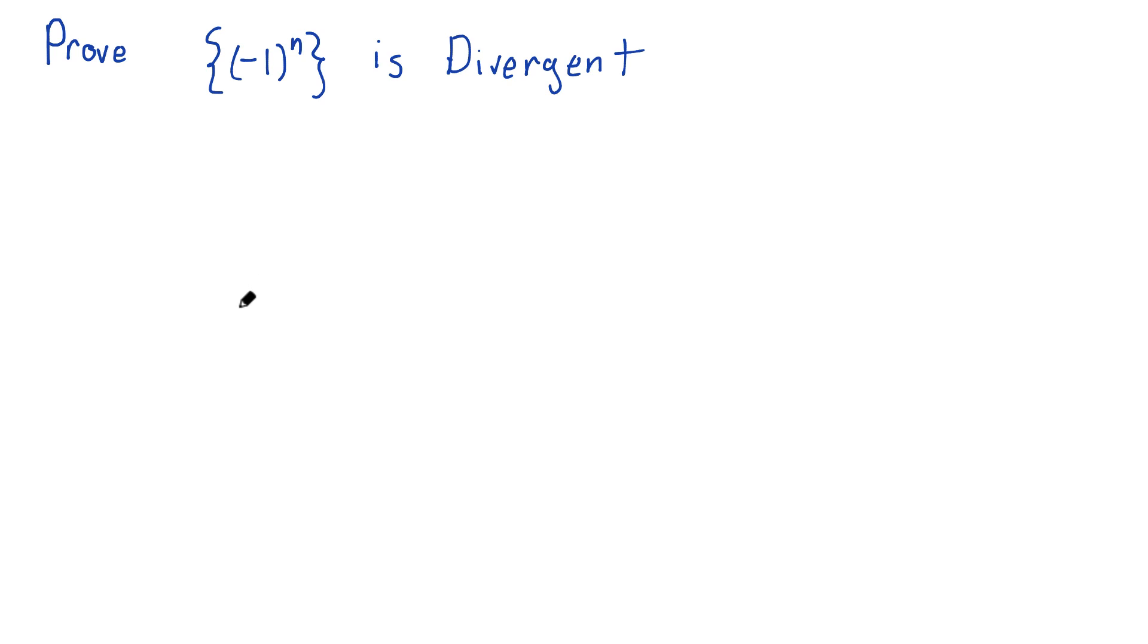Of course, this is divergent. There is no limit. This never settles down. But how would you prove this? Well, one way to do it I like, I'm going to do it by contradiction.